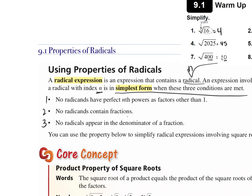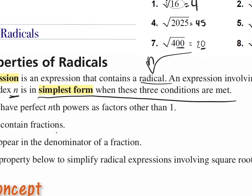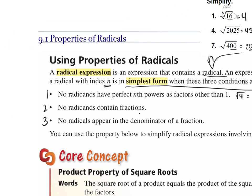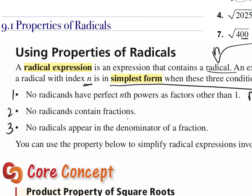The first condition says no radicands can have perfect n-th powers as factors other than 1. What that means is if we have the square root of 4, we should never leave it just sitting there. What can we always change the square root of 4 into? The number 2 without a radical. So we're not going to leave radicals in our expression at the end, because then it wouldn't be completely simplified. The second thing says no radicands can contain fractions — you cannot have a radical with 1/4 underneath. If you leave your answer like this, you will lose a lot of points. You cannot have a fraction underneath the radical.